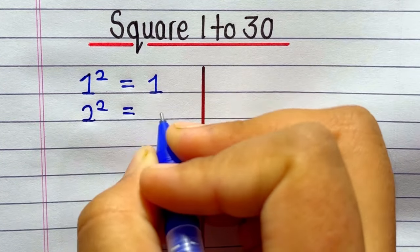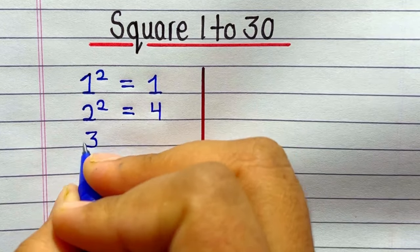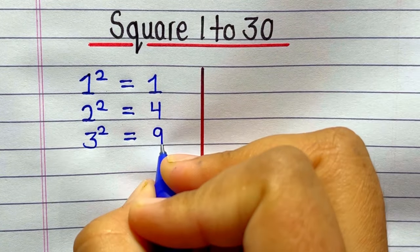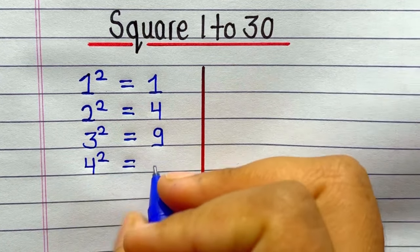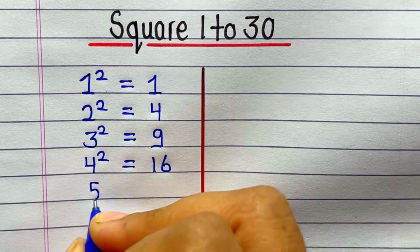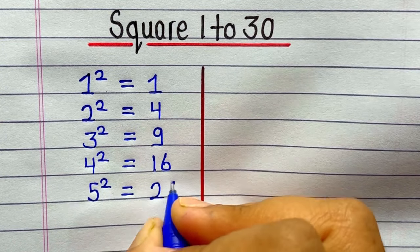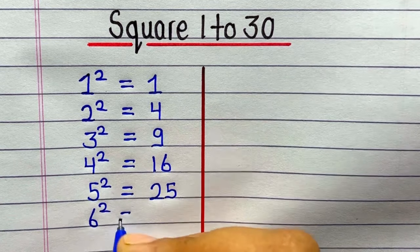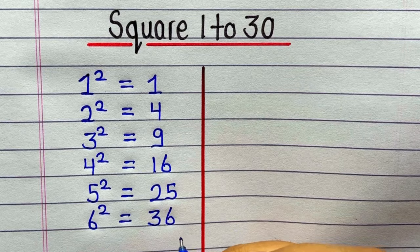1 ka square hoga 1. 2 ka square hai 4. 3 ka square hai 9. 4 ka square hai 16. 5 ka square hai 25. 6 ka square hoga 36.